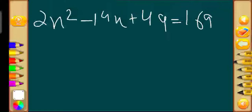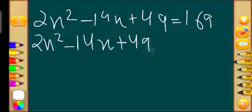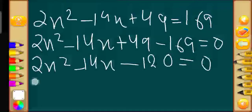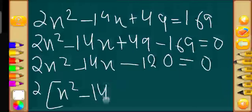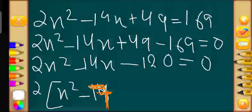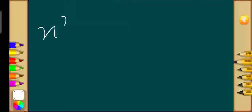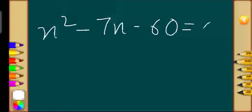Now moving 169 to the other side: 2x squared minus 14x plus 49 minus 169 equals 0. So 49 minus 169 gives minus 120, giving 2x squared minus 14x minus 120 equals 0. We can take 2 as common: x squared minus 7x minus 60 equals 0. Dividing both sides by 2 — since 0 divided by 2 is 0 — we get the final equation: x squared minus 7x minus 60 equals 0.